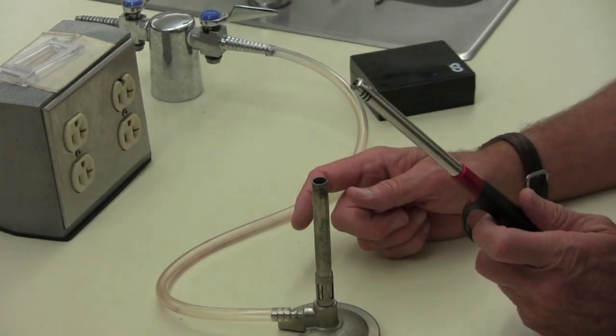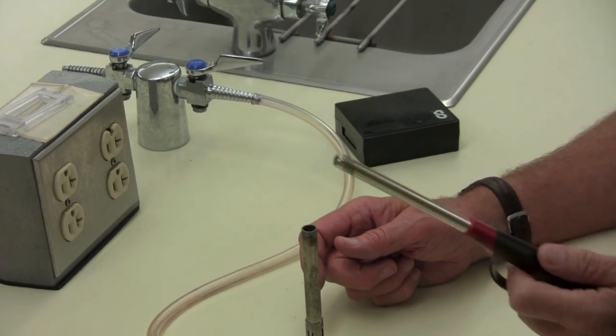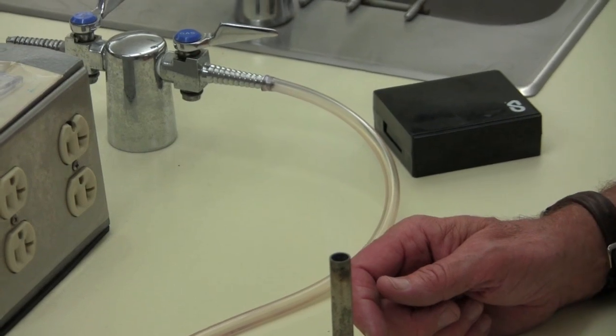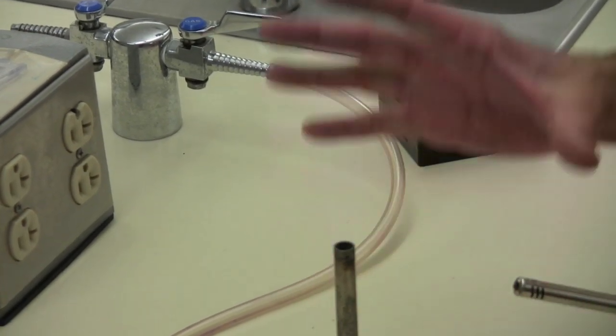Once you do that, you can light it with these strikers. You just need to hold it near the top of the Bunsen burner and you should get a flame.